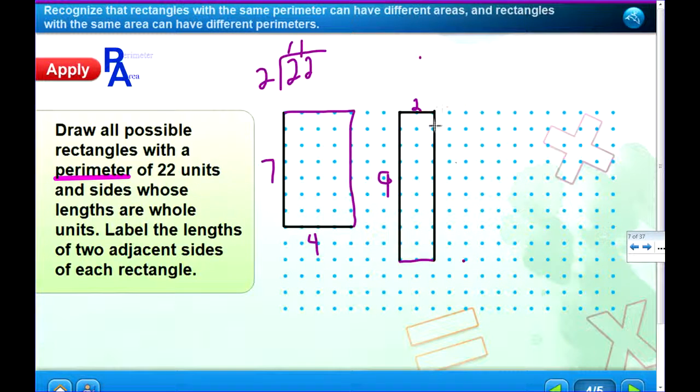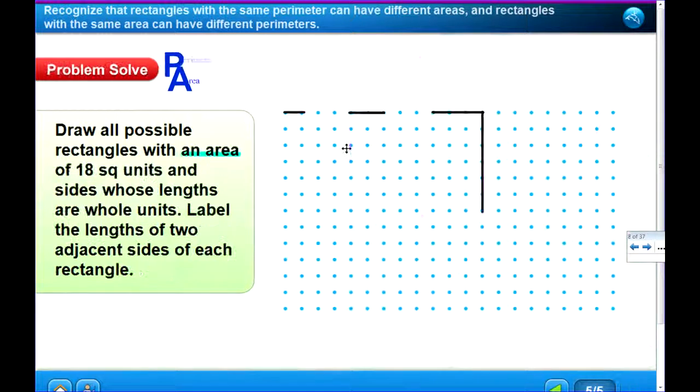Well, there's other combinations. These aren't the only two. Let's look at these first two and see if we can find the area now. What's 7 times 4? There should be 28 squares in there. How many squares are going to be in this one? 9 times 2. 18 is all.